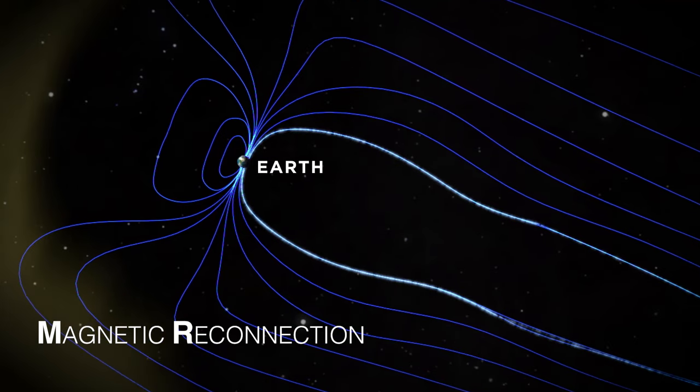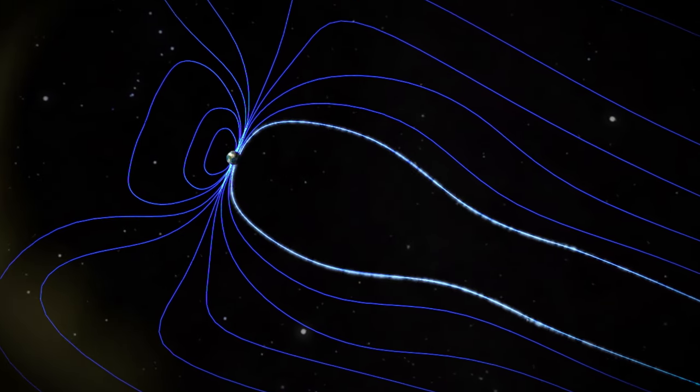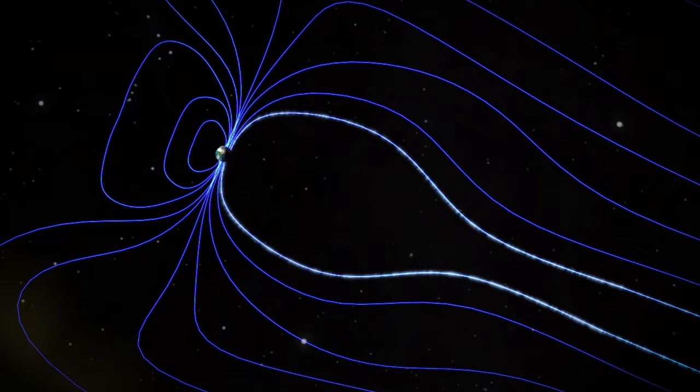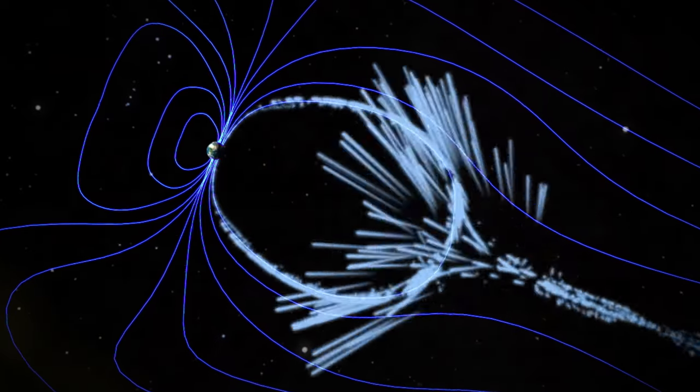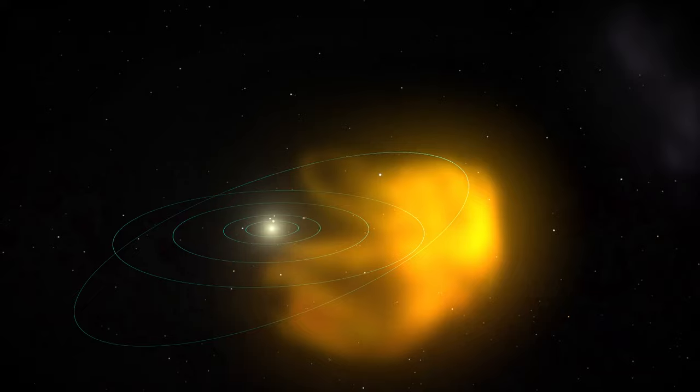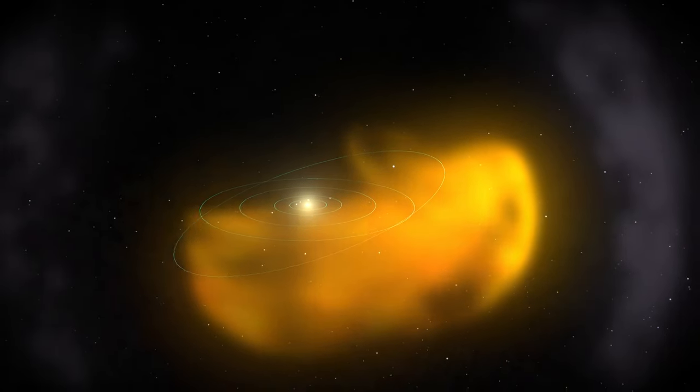Magnetic reconnection occurs where magnetic field lines are constantly shifting. When the lines become tangled, they explosively snap and realign. This transfers energy and sends nearby plasma particles flying through space.